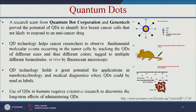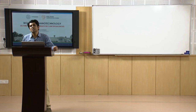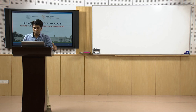A research team from Quantum Dot Corporation made quantum dots to identify live breast cancer cells. This technology is available for a mouse model and can also be used for various cell biology applications. However, use of the same quantum dots in humans requires extensive research to determine long-term effects, as these quantum dots are made up of heavy metals. So their use for human application needs a lot of research and clinical trials.